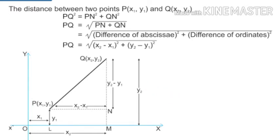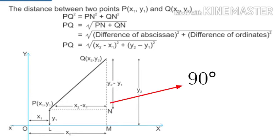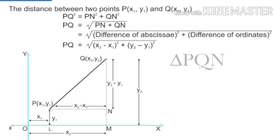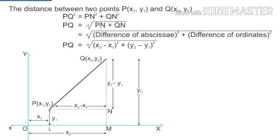If you observe the diagram, the points P, Q, and N form a triangle. Since we drew QM as a perpendicular line, the angle at N measures 90 degrees. Therefore, triangle PQN is a right-angle triangle.